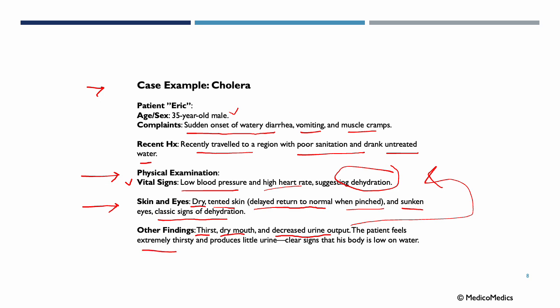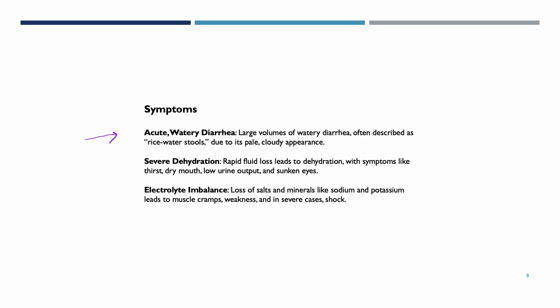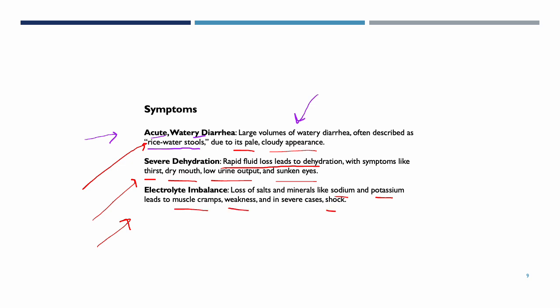The patient is extremely thirsty and produces very little urine. Key symptoms of cholera include acute watery diarrhea — large volumes often described as rice water stools due to their pale, cloudy appearance, which is high-yield for exams. Severe dehydration manifests as thirst, dry mouth, low urine output, and sunken eyes. Electrolyte imbalance from loss of sodium and potassium leads to muscle cramps, weakness, and in severe cases, shock.